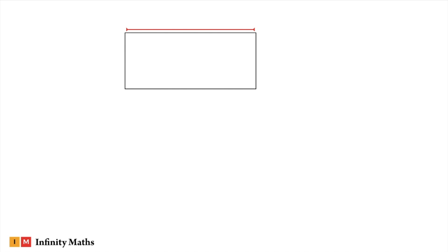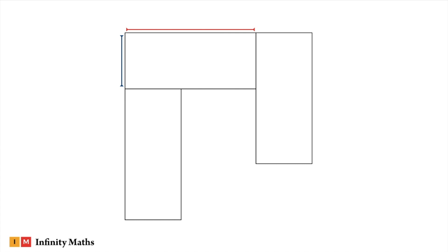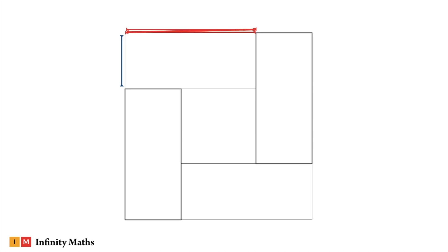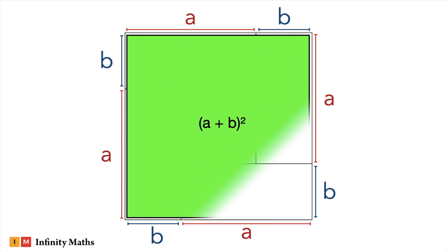Let's begin with a rectangle — this being the length and this being the breadth. Let's create two copies of the rectangle and arrange them vertically, and also create one more copy and arrange it horizontally at the bottom. Let's observe the side of this big square we got. Let's call this red length as a and this blue length as b, so you can see the side length of this square is a plus b.